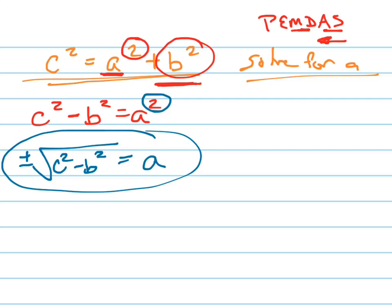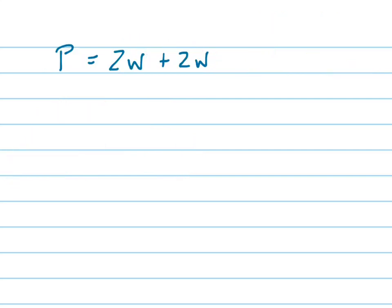Let's try another one. All right, here's the perimeter formula. Perimeter equals 2 width plus, whoops, not 2W. 2 width, 2W plus 2L. That's the perimeter of a rectangle. So let's solve this for L.